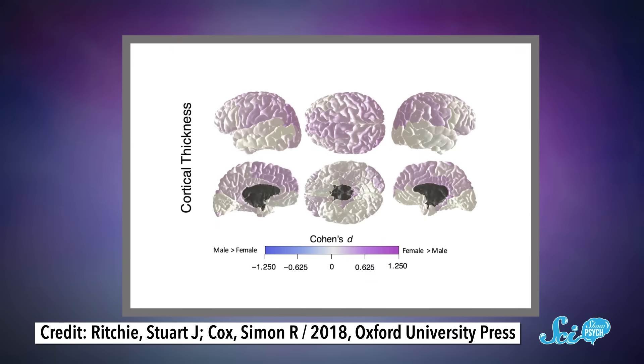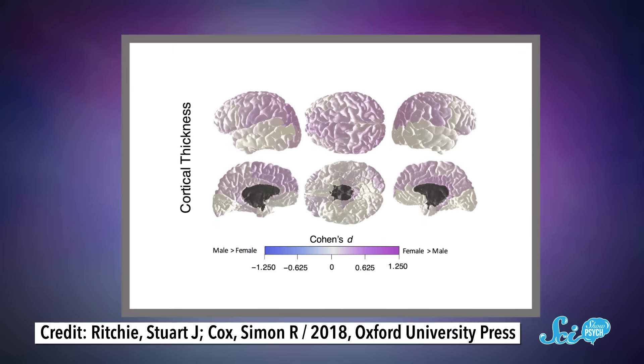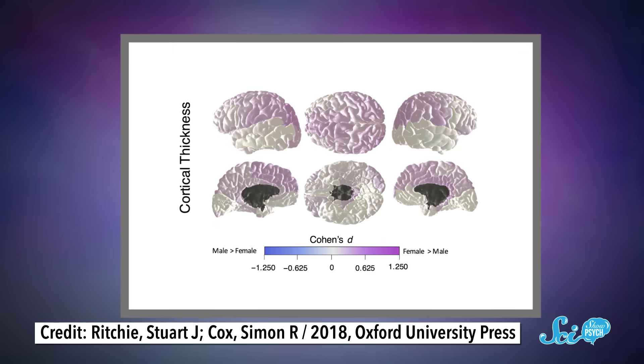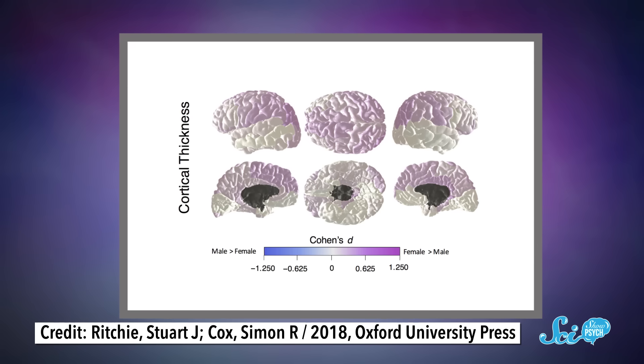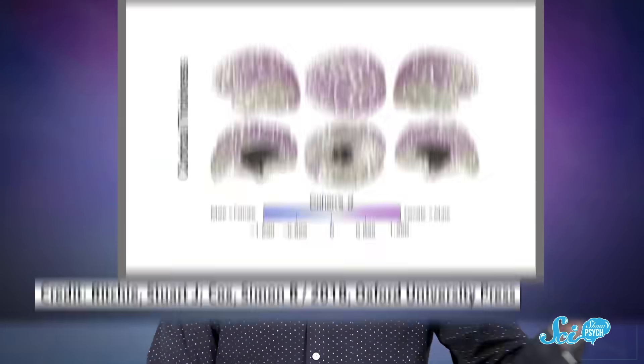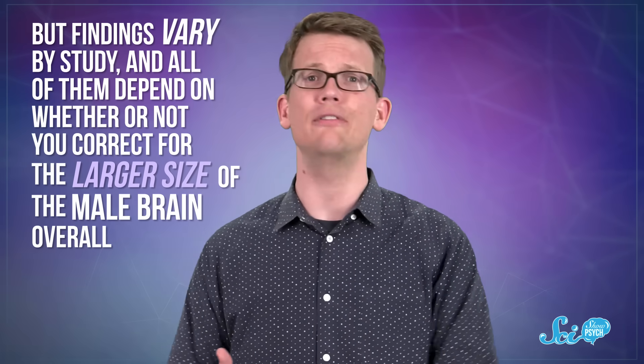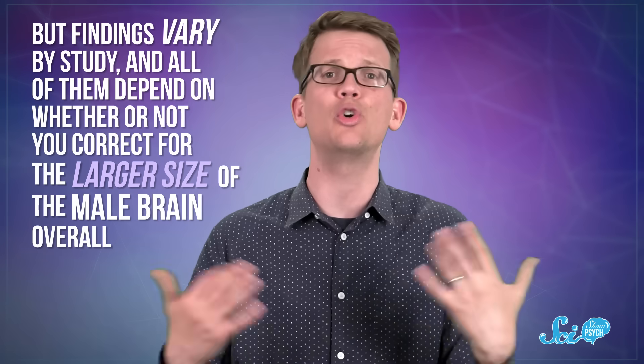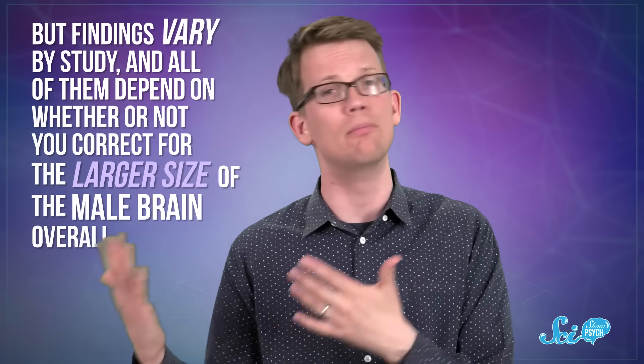Other studies suggest that there are differences in specific brain regions, or that for females, some regions have thicker cortices, the folded gray matter on the outer edge of the brain that we use to do our higher-level cognition. But findings vary by study, and all of them depend on whether or not you correct for the larger size of the male brain overall. When you do, some of the results disappear, some stay the same, and some even flip which sex is larger.